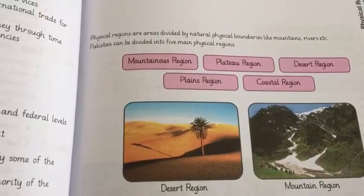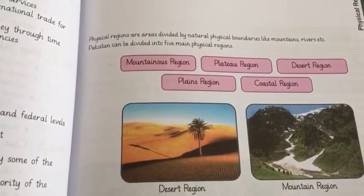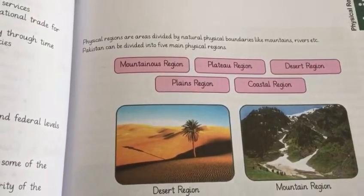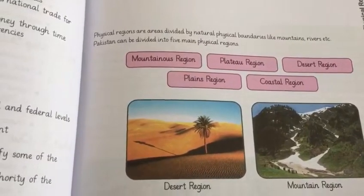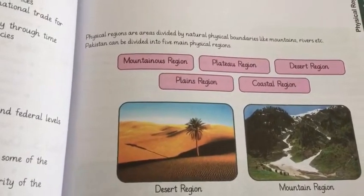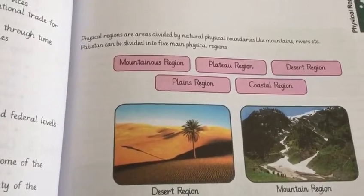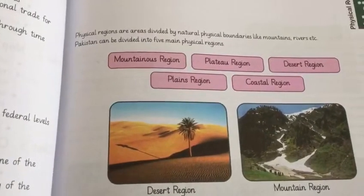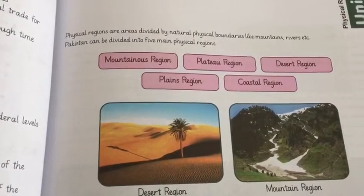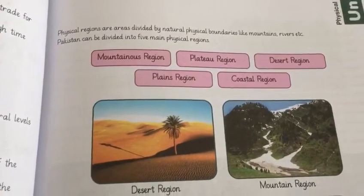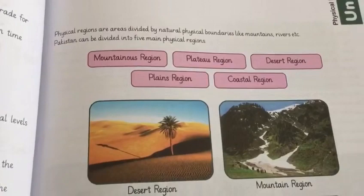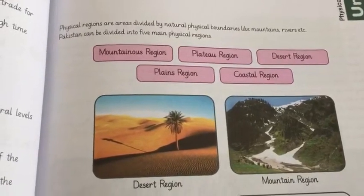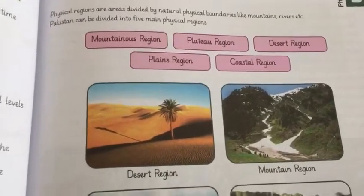Pakistan can be divided into five main physical regions: the mountainous region, the plateau region, the desert region, the plains region, and the coastal region.